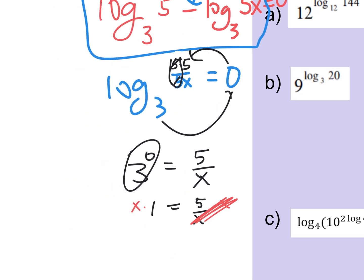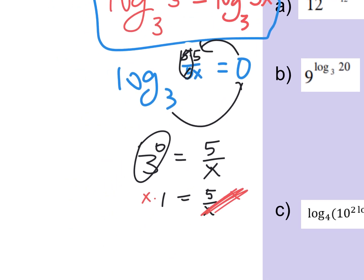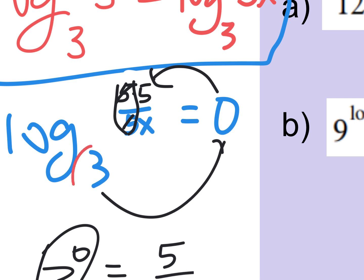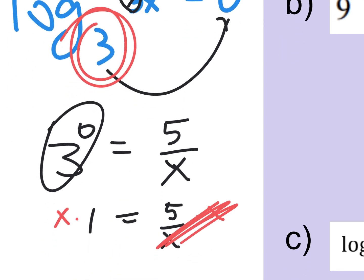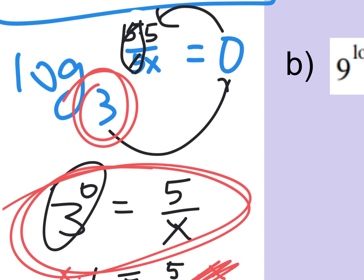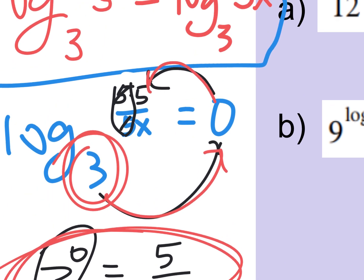Please look for this rewrite technique — where you rewrite a log equation so it isn't a log anymore. If you can get it out of logs, a lot of times you can get the answer. There are no logs in the final step. The base to the power equals the argument: that to the that equaled that.